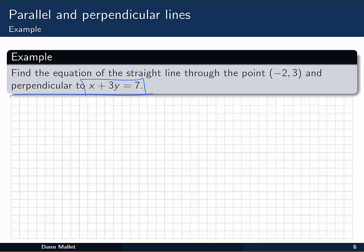The line that's given, x plus 3y equals 7, in our regular form is going to be minus 1 on 3x plus 7 on 3, which we can see has a slope of minus 1 on 3.